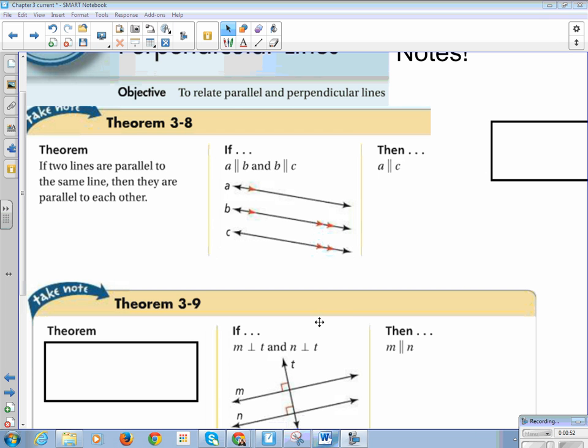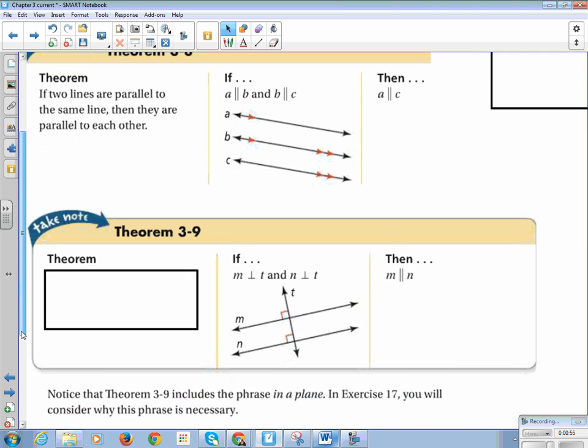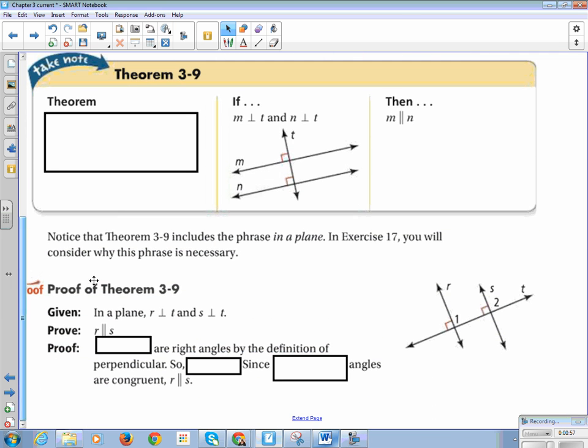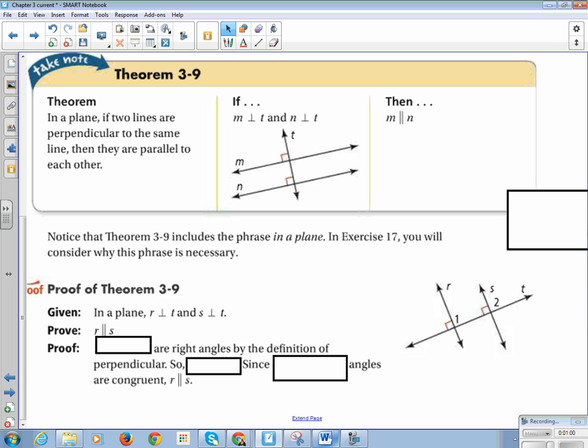All right, so Theorem 3-9. It says if in a plane, if two lines are perpendicular to the same line, then they are parallel to each other. For example, here, line M is perpendicular to line T, line N is perpendicular to line T, then M is parallel to N.